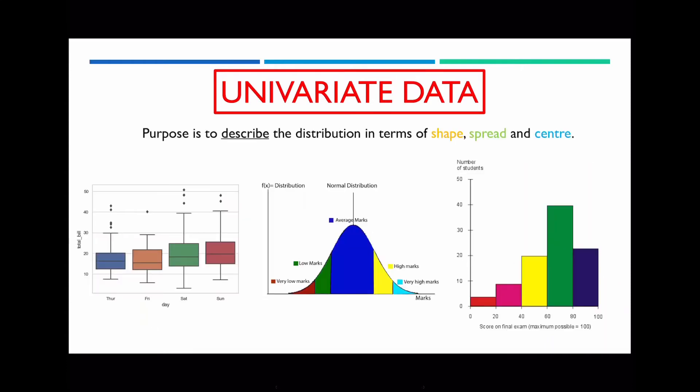What we've been doing so far is describing these distributions in terms of shape, spread, and center. For shape, it could either be symmetric, positively or negatively skewed. For spread, we could be looking at the standard deviation, the range, or the IQR. And for center, we've been looking at the mean, median, and mode. What we're going to be looking at now is something referred to as bivariate data.